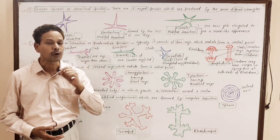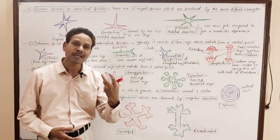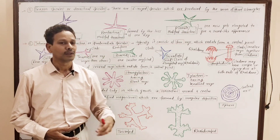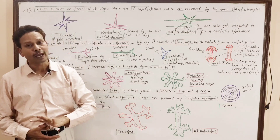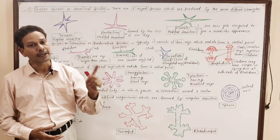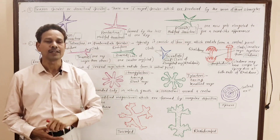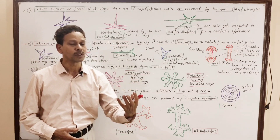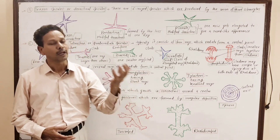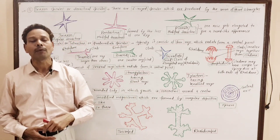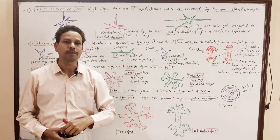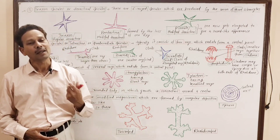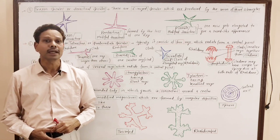Dear students, please note down. On the basis of chemical nature, the spicules are of two types: calcareous spicules and siliceous spicules. In calcareous spicules, the deposition occurs in the form of calcium carbonate, while in siliceous spicules, the deposition occurs in the form of silica.